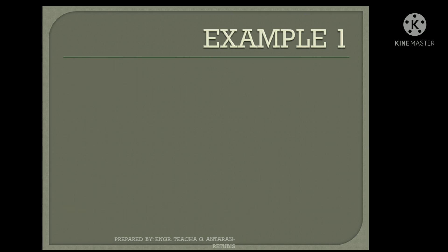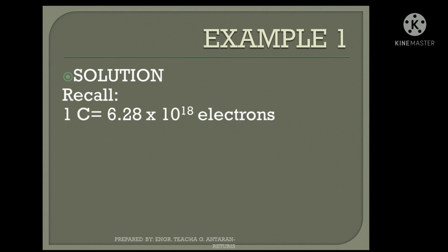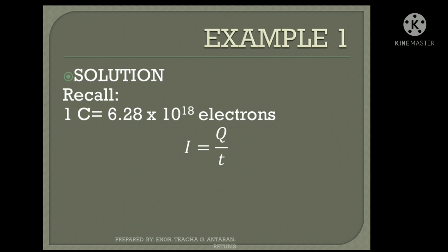How are we going to solve for this? Recall that 1 coulomb is equivalent to a charge of 6.28 times 10 raised to positive 18 electrons — that is the number of electrons in just 1 coulomb. Also recall the formula regarding current: current is equal to charge over time.